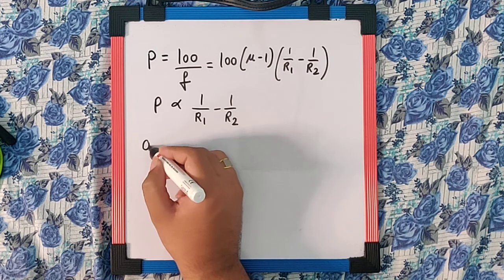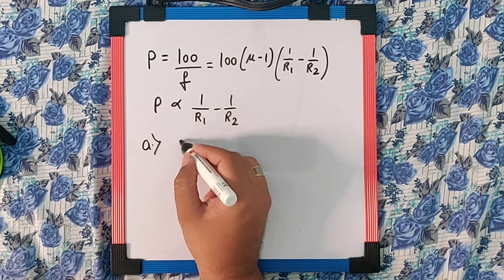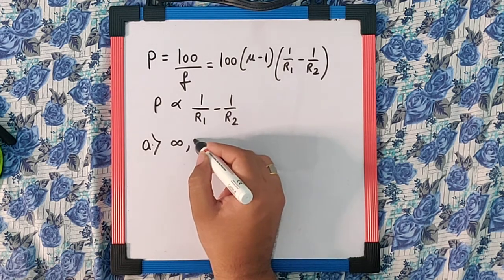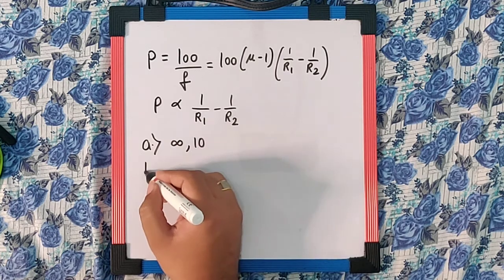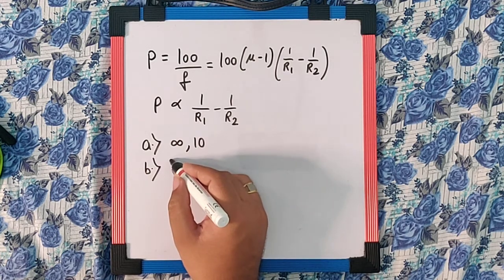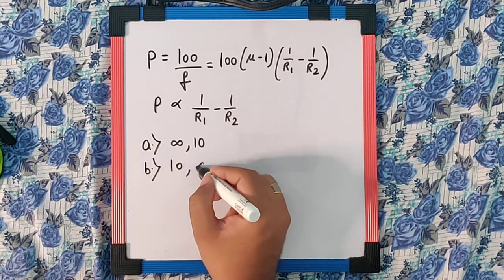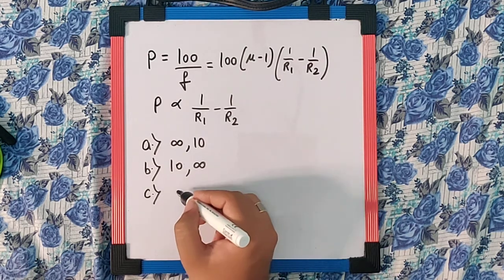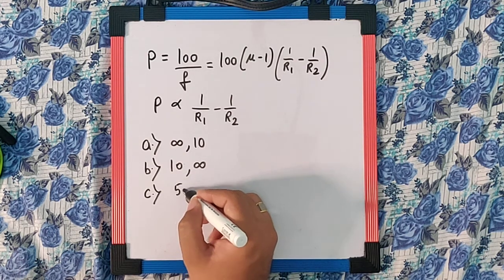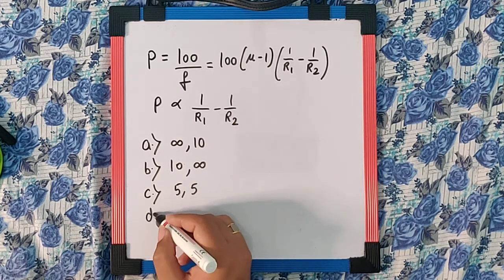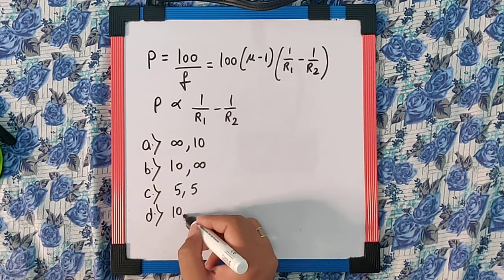Now the options given over here are: R1 as infinity, R2 as 10. The next option is R1 as 10, R2 as infinity. The next option we have is R1, R2 both as 5, and the next option is R1, R2 both as 10.